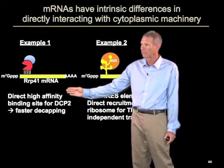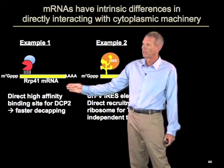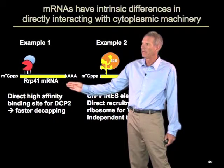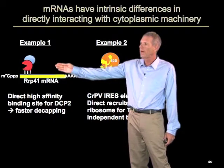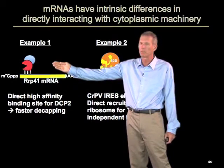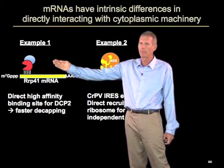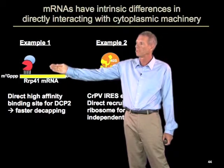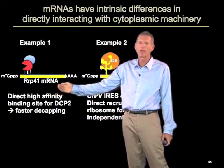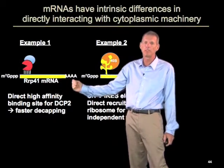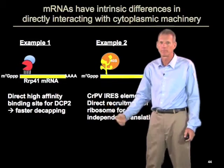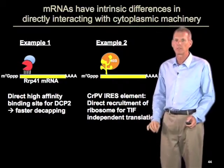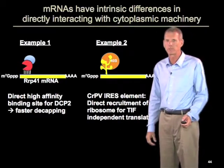For example, in mammalian cells, the RRP41 mRNA has a high affinity binding site for the DCP2 protein, which is the decapping enzyme. The presence of that sequence leads to this mRNA being rapidly degraded. So these are intrinsic differences in how mRNAs interact with the cytoplasmic machinery.